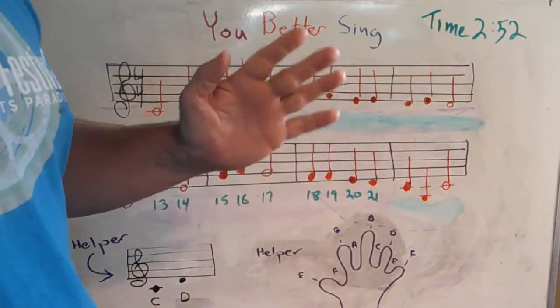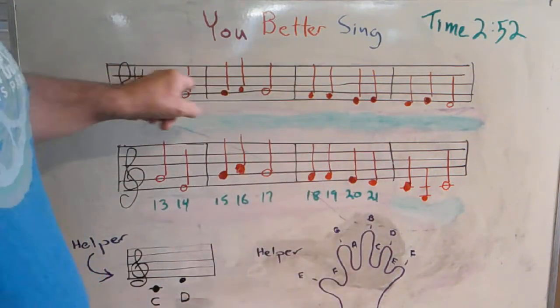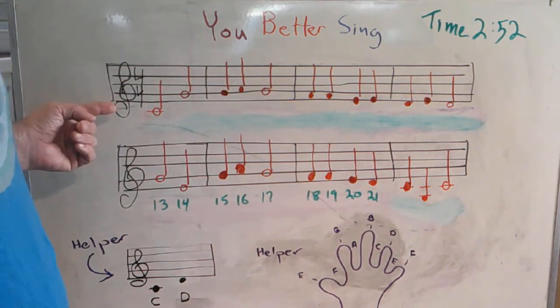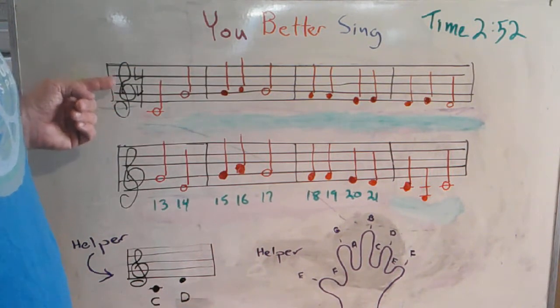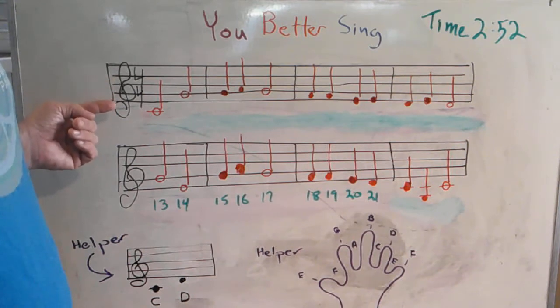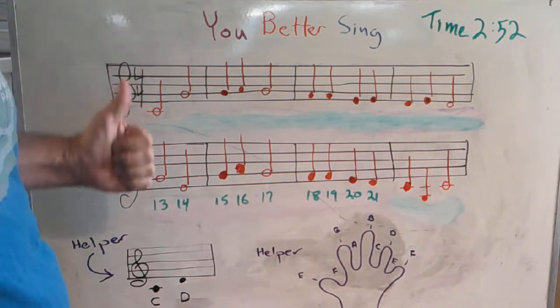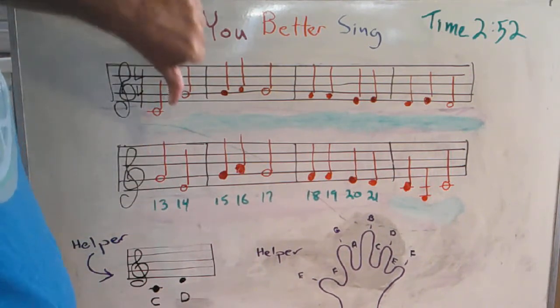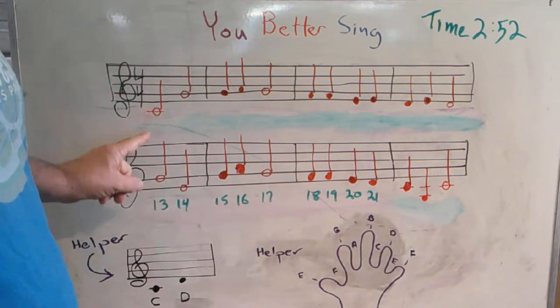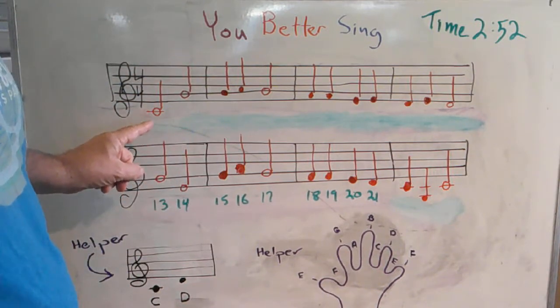So this thing with all five lines is called the staff. The staff has five lines. As you go up this way, the frequency or the pitch goes higher. When you go this way, the frequency goes lower.